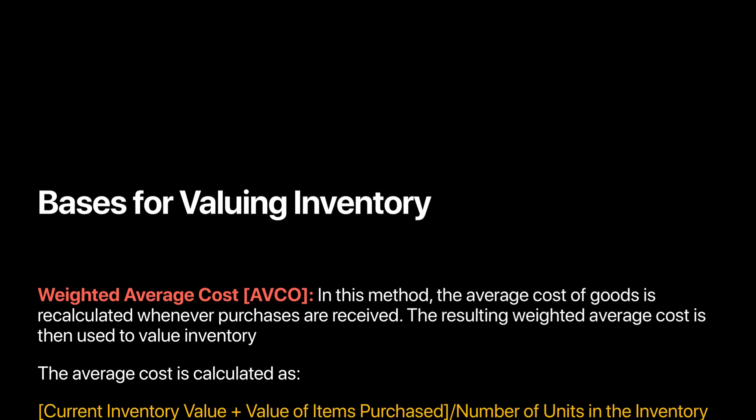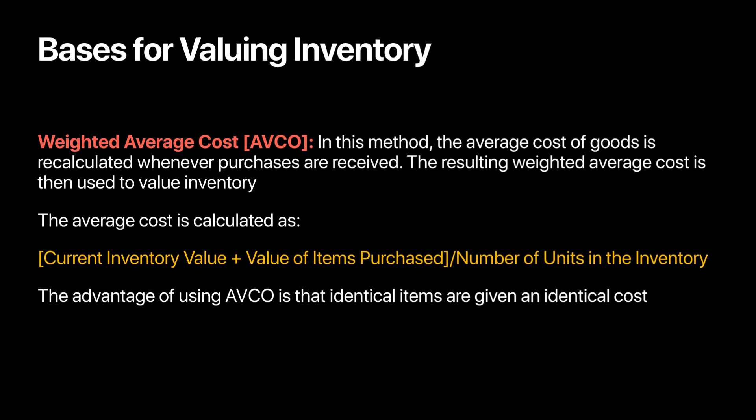Another frequently used method besides FIFO is the weighted average cost method, or AVCO. Under this method, all goods are valued at an average cost. So if you have purchased goods in January, February, March, and April, you calculate an average price. The average price is calculated by taking the value of inventory plus all items purchased and dividing by the number of units, giving you an average price for all units. This method assumes all units are identical and should therefore be valued at an average price, which is an advantage of AVCO. Companies often decide between FIFO and AVCO based on the characteristics of their business model, the nature of their inventory, and which method gives a more realistic picture.